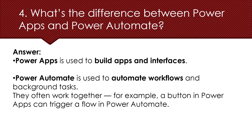Question number four: what is the difference between Power Apps and Power Automate? Power Apps is used to build interactive app interfaces, while Power Automate is used for background automation like workflows — such as sending an email or updating records when something happens. A button in Power Apps can trigger a flow in Power Automate, and both work together very well.